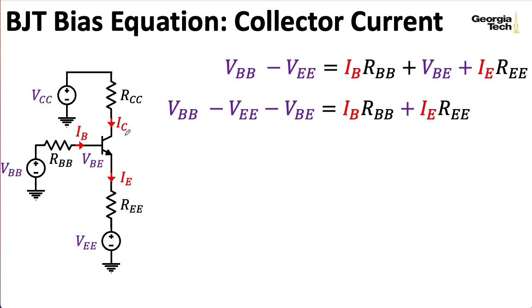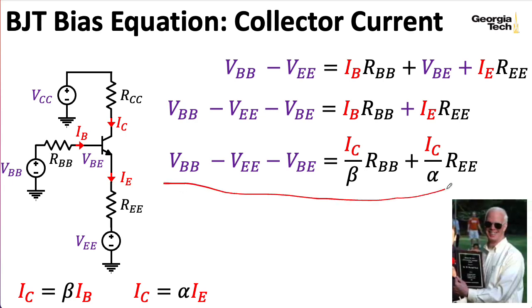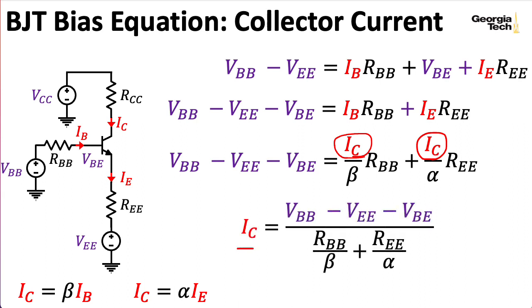Now, I would like to get an expression for the collector current. Right now, I have it in terms of the base and the emitter current, but now I can remember that the collector current is beta times the base current, and the collector current is alpha times the emitter current. So, I can divide both sides of this equation by beta and both sides of this equation by alpha and rewrite what's on the right in terms of IC over beta and IC over alpha. And this is what Professor Marshall Leach calls the BJT bias equation. Now, if the only ICs that actually appear in this expression are on the right here, you can then rearrange the expression and directly solve for IC like thus.